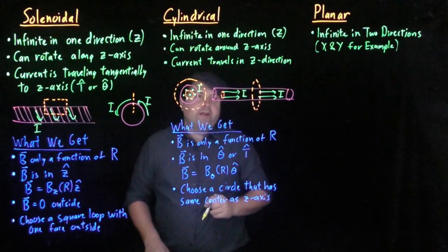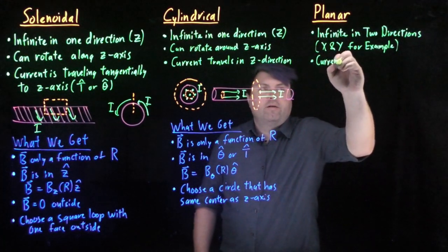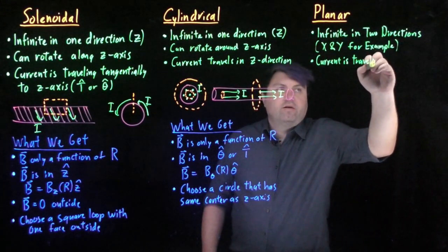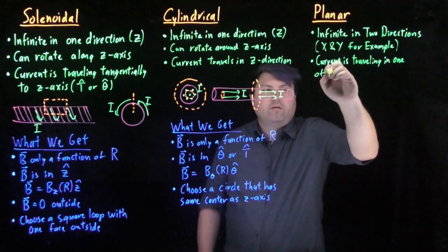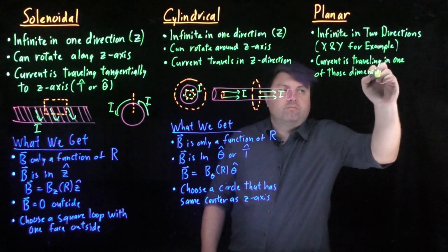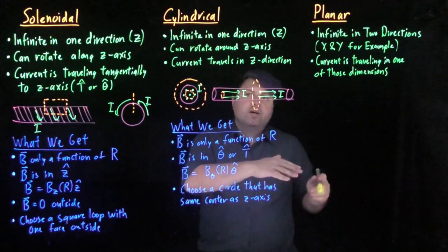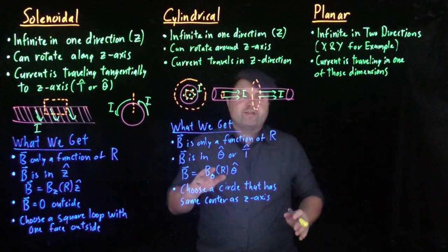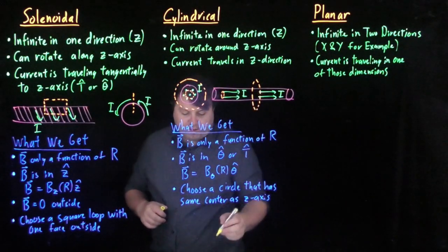And in our planar current distribution, then the current is traveling in one of those dimensions. Since it's infinite, if it's traveling at, say, a 45-degree angle, we just reorient our coordinate system until our current is one of the cardinal directions that we're talking about.